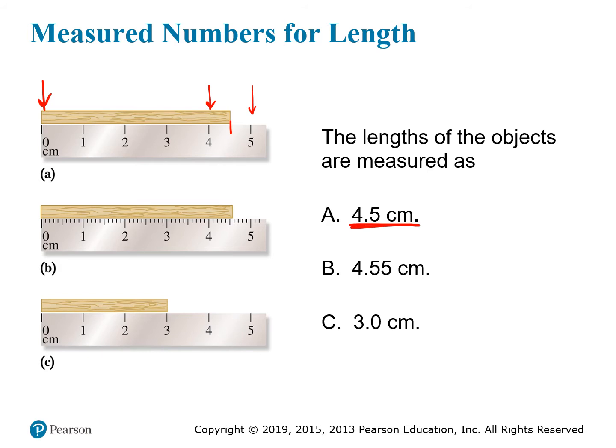Keep in mind that this is an estimate, though, so another person might look at the same instrument and decide that the stick is maybe 4.4 centimeters or 4.6 centimeters. Even though that last digit has some uncertainty in this sense, it is still reported as a significant figure in the measurement. Any more digits than that would just be a complete guess, so we stop there.